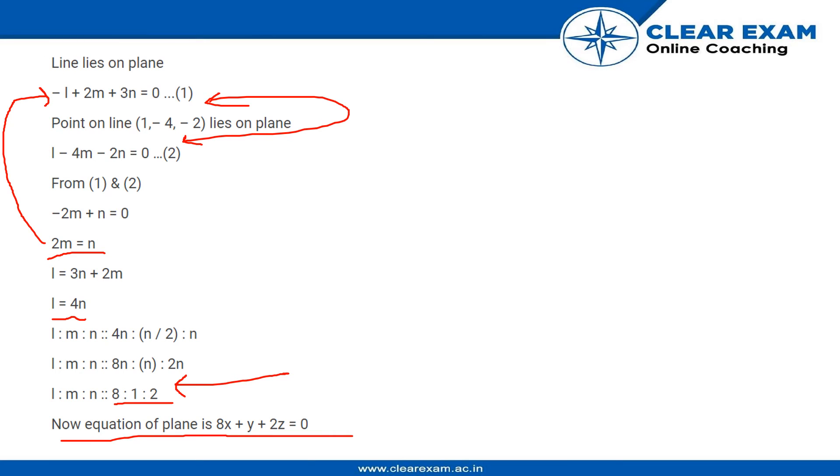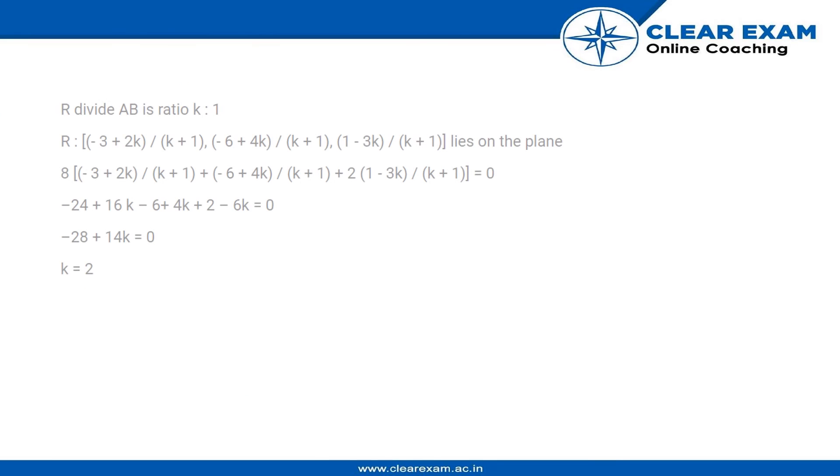2Z equal to 0. Once we have the plane equation, we know how the ratio is, that is K is to 1, and the point is A below, B is above, and the ratio is something like this as per the diagram.